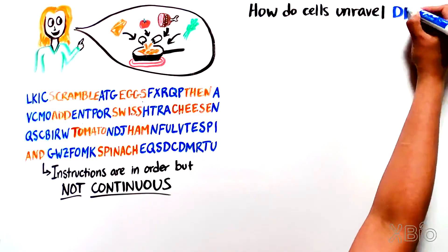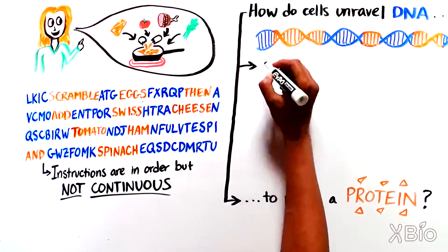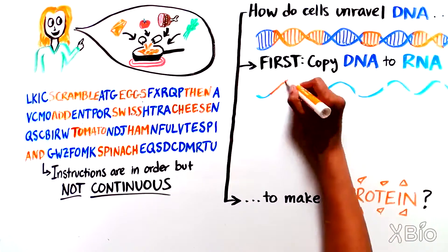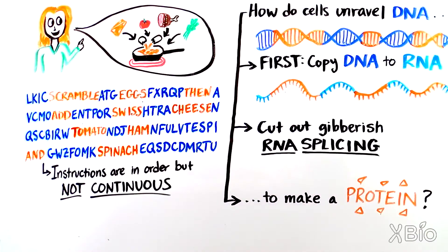But how do our cells unravel the confusing DNA instructions to make a protein? They do this by first copying the DNA into another type of nucleic acid called RNA, and then cutting the gibberish regions out of the RNA. This process is known as RNA splicing.